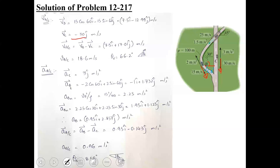Since the velocity vector of car B lies in the fourth quadrant, it has a positive x-component and a negative y-component. So vB becomes 15 cos 60 i minus 15 sin 60 j. Applying the relative velocity equation, vBC equals vB minus vC.